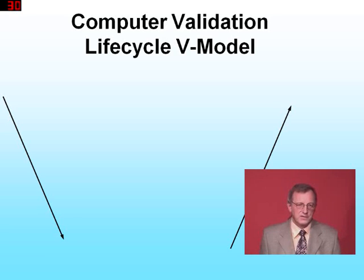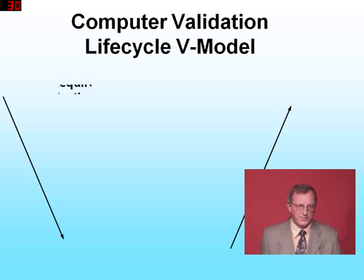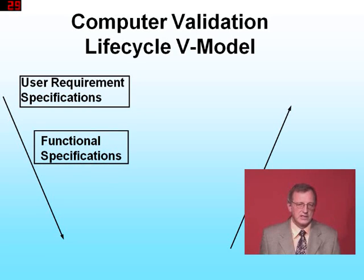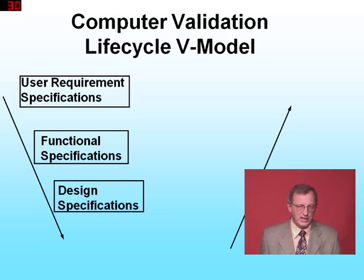The software lifecycle starts with setting user requirement specifications. They define what the user wants to do with the system. From these user requirement specifications, software functions are defined that are needed to meet the user's requirements. These are called functional specifications. From the functional specifications, the programmers develop the design specifications. They specify how the functions are implemented, for example, which formulas are used in calculations.